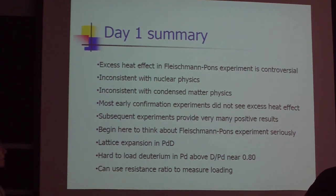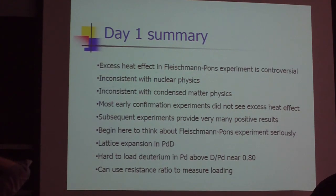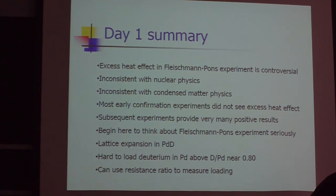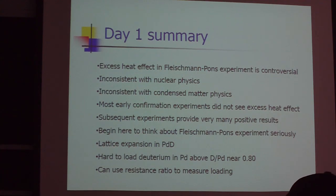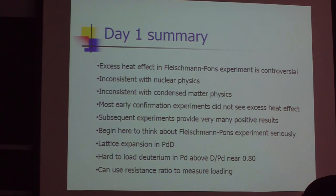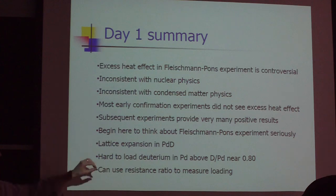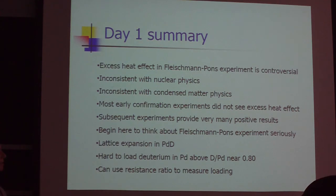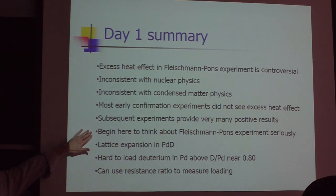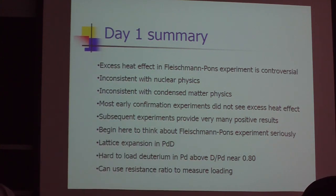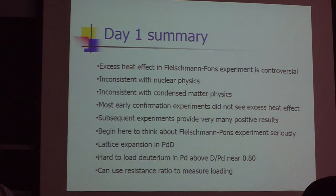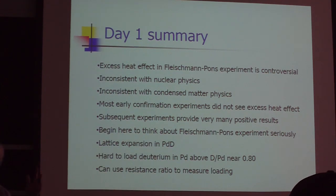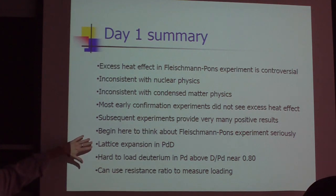So we've finally reached the end of today's topics. What have we learned? Excess heat is controversial. We probably knew that before. It's inconsistent with nuclear physics in the literature and the textbooks. It's inconsistent with condensed matter physics in the literature and the textbooks. Early confirmation experiments were negative. Subsequent experiments have provided a much larger number of positive results. What I want to do in this course, and what we've begun to do in this lecture, is to take the experiment seriously and begin to try to understand the experiment.